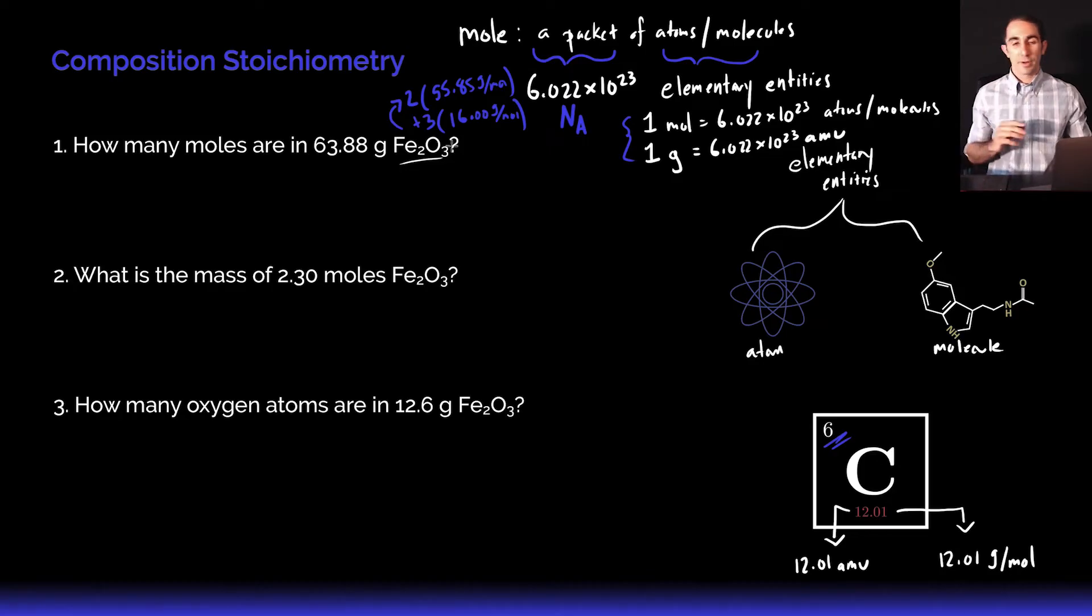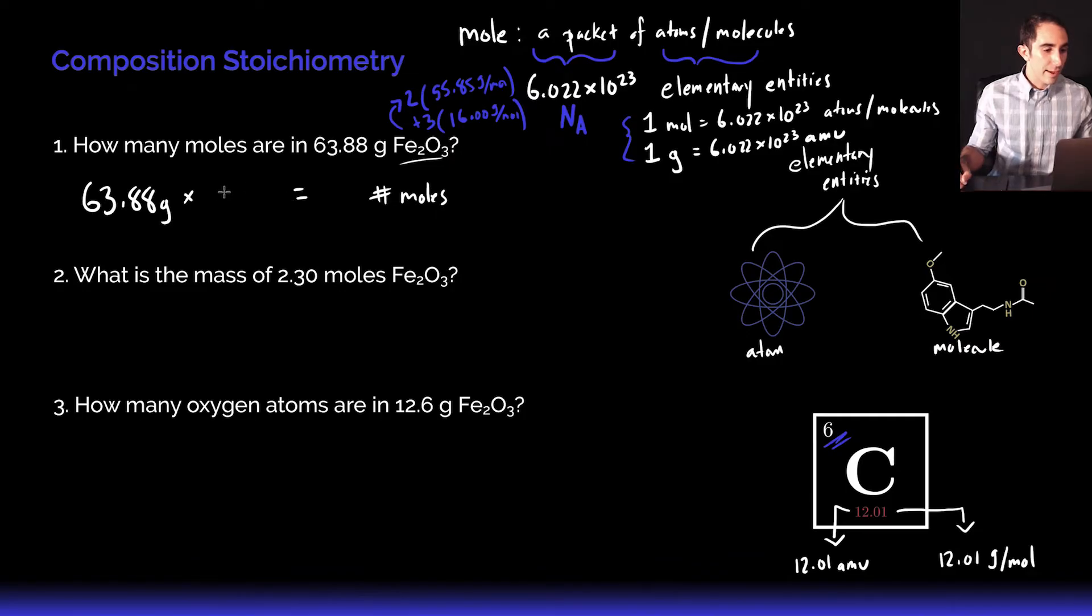When I add all that together, I'm going to get 159.7 grams per mole, which is what I'm going to use here. Mathematically, I'm going from grams to mole. I have 63.88 grams and I'm trying to get to number of moles. All I really need to do here is cancel out that gram unit and give me the mole unit. I'm going to put grams down here and moles up here. That is just dimensional analysis. I have 159.7 grams per mole, so my units cancel out perfectly and get me the desired unit of just number of moles.